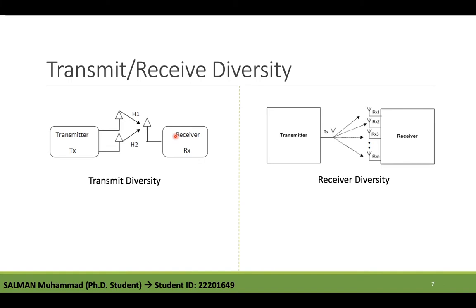Transmit diversity uses TX diversity to diminish the effect of fading by transmitting the same information from two different antennas. The data from the second antenna (open-loop antenna 2) is encoded differently to distinguish it from antenna 1. The user equipment must be able to recognize the information coming from two different locations and properly decode the data.